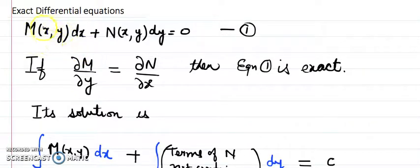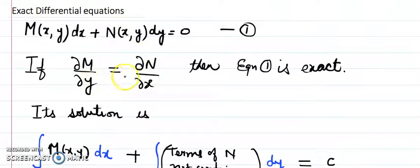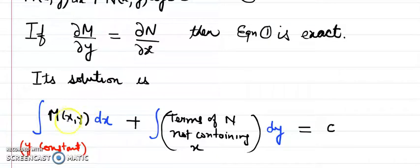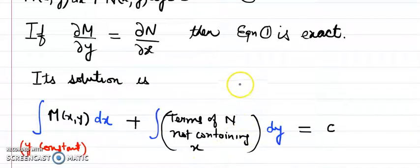M is the coefficient of dx and N is the coefficient of dy. If we partially differentiate M with respect to y and partially differentiate N with respect to x and these two expressions come out to be the same, we call such a differential equation exact. Once this condition is fulfilled, we find the solution by integrating M with respect to x keeping y constant, plus integrating the terms of N not containing x with respect to y, equals to C.